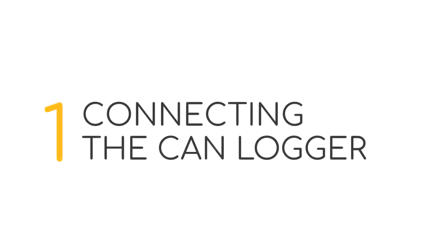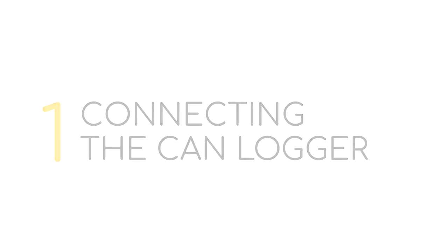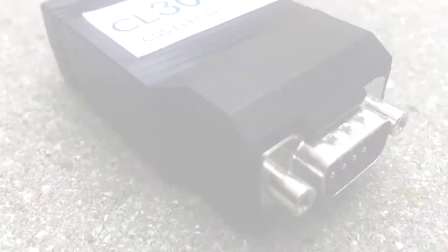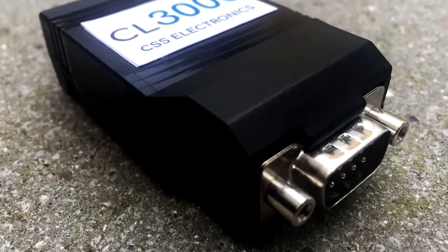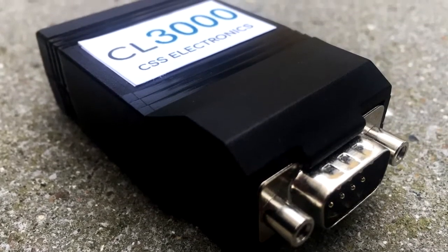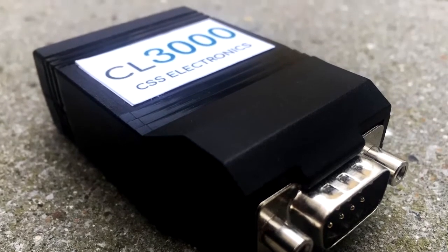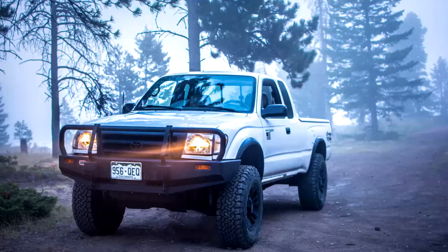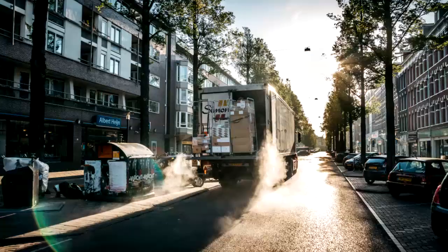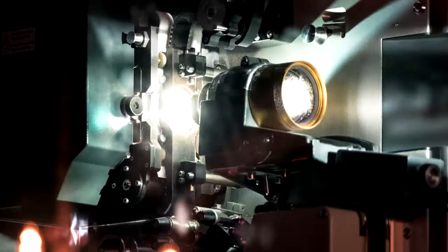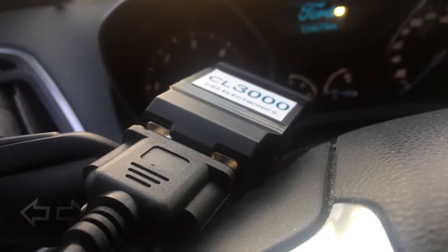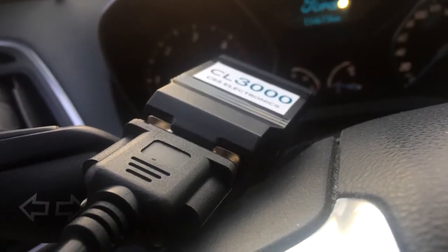Let's go. First of all, let's start with step one: connecting the CANlogger. The CANlogger X1000 is ready to log data out of the box. With auto bitrate detection, you can just connect the logger to your CANbus application — for example, a car, truck, or production line. The logger uses a DB9 connector,